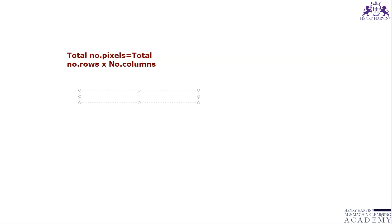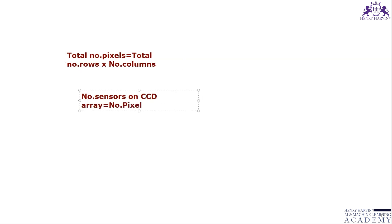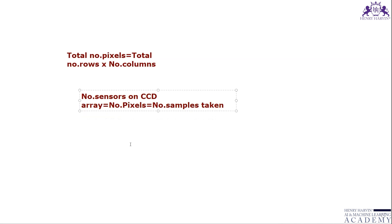In case of a CCD array, the number of pixels equals the number of samples taken, which is also equal to the number of sensors on a CCD array. Oversampling is used for zooming. The difference between sampling and zooming is that sampling is done on signals while zooming is done on the digital image. We should understand the difference between sampling and quantization: sampling is done on the x-axis, and quantization is done on the y-axis.